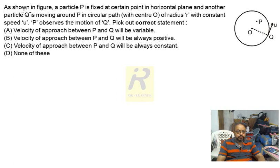Here the question is, as shown in figure, a particle P is fixed at certain point in a horizontal plane and another particle Q is moving around P in circular path, the center O of radius R with constant speed U. P observes the motion of Q. Pick out correct statement.